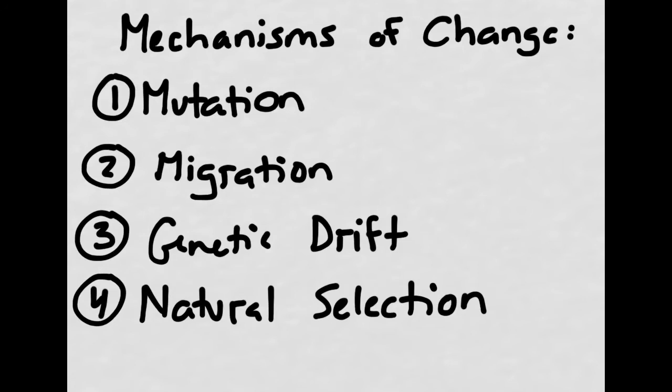So there are four major mechanisms of evolution, and we call these mechanisms of change. They are mutations, migrations, genetic drift, and natural selection. We're going to go through all of these and understand how each of these different things could change the number of genetic variations in a population.